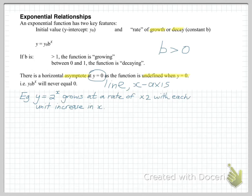A couple of examples. y equals 2 to the x, a very simple example. This function is growing at a rate of times two, or by a factor of two, with each unit increase in the value of x. Here we have b less than one, y equals 0.5 to the power of x. This is decaying by a factor of 0.5 with each unit increase in x.